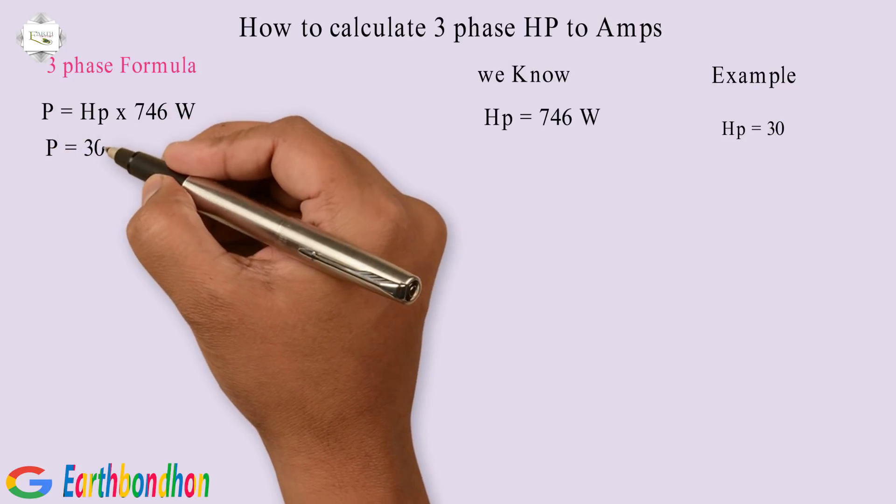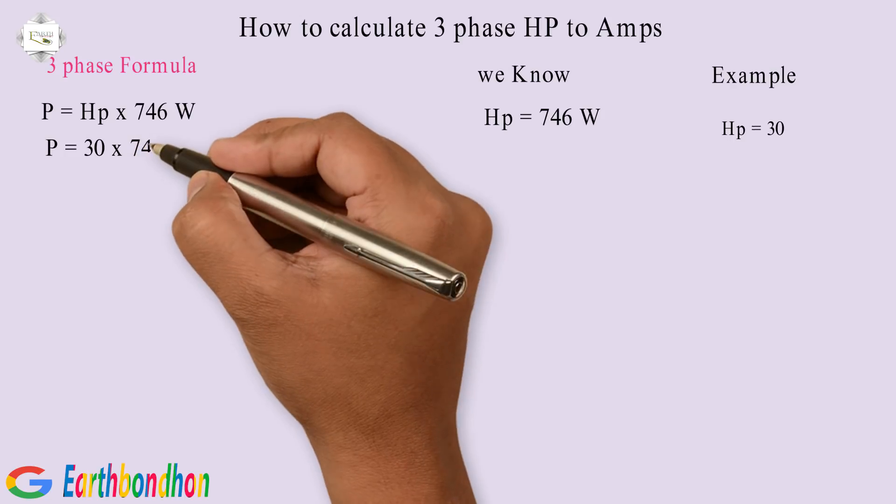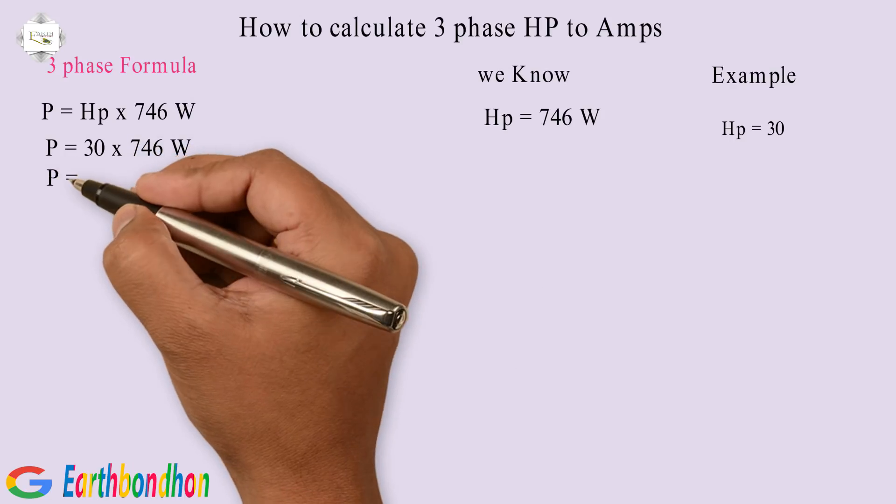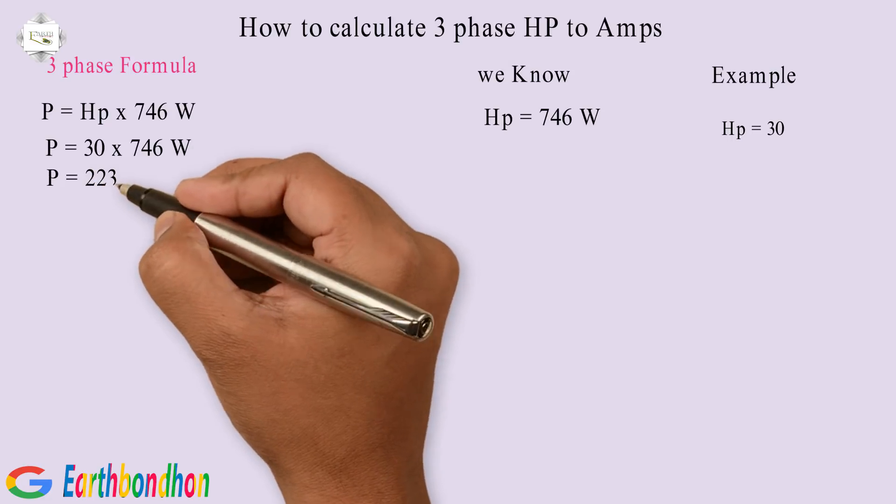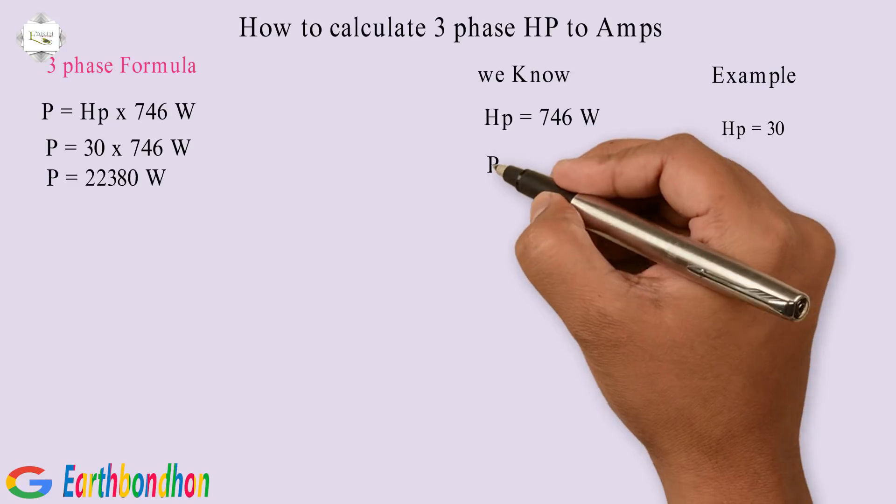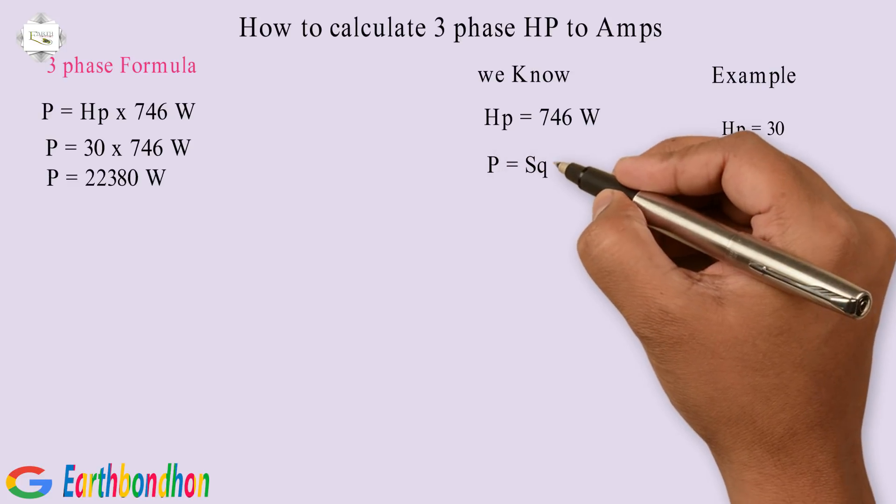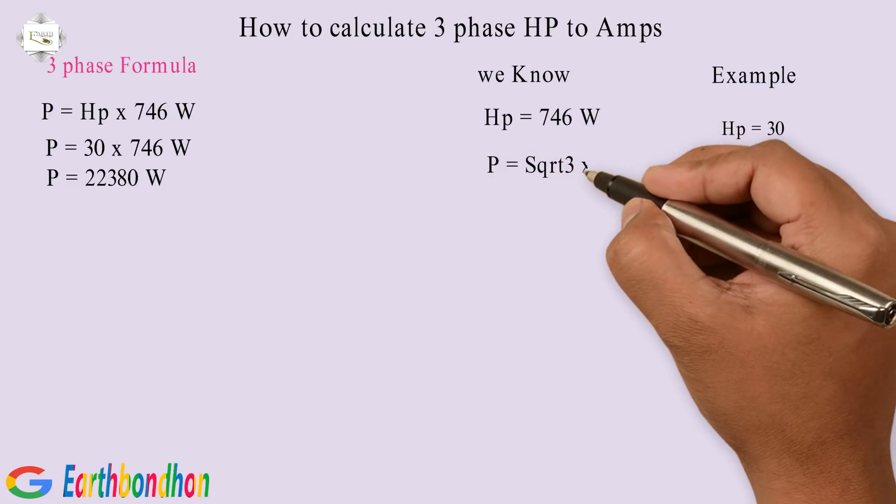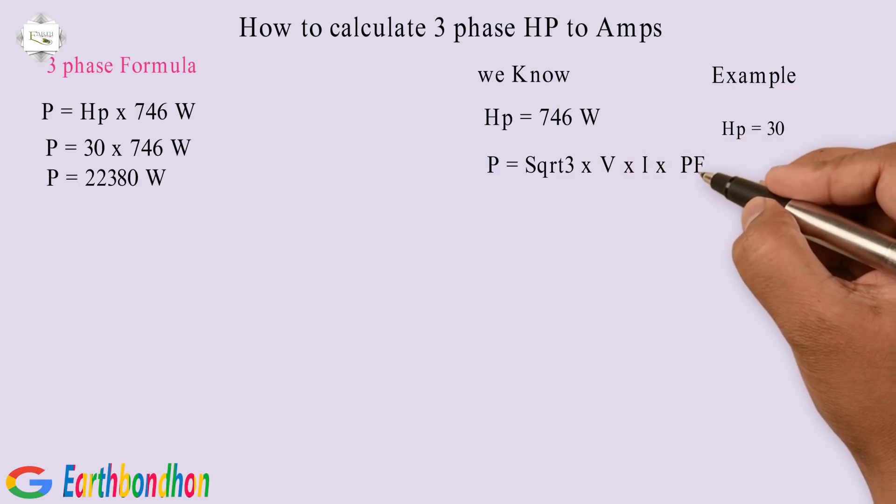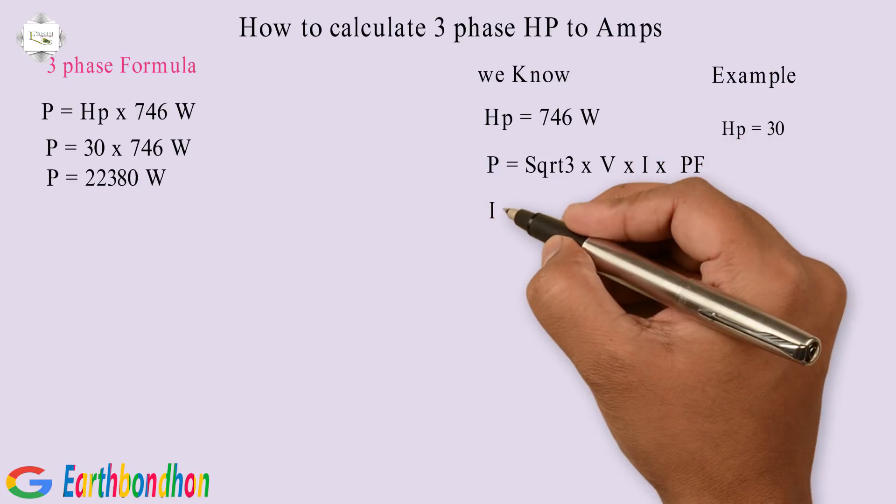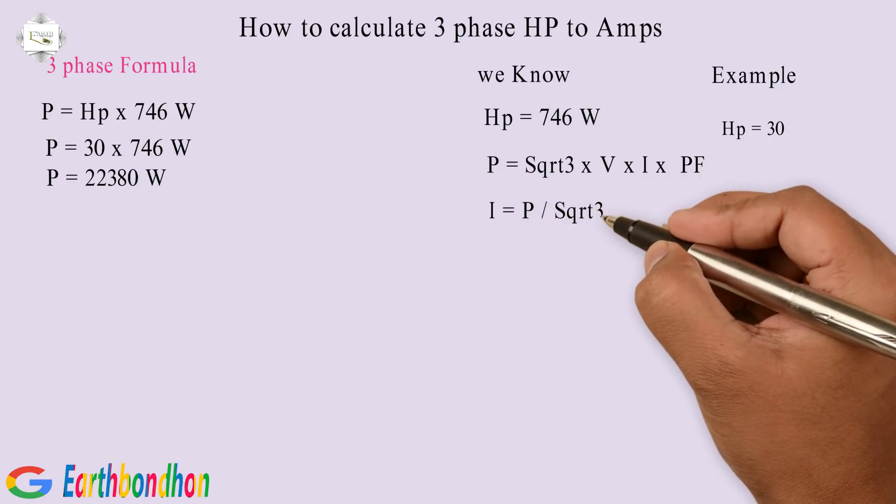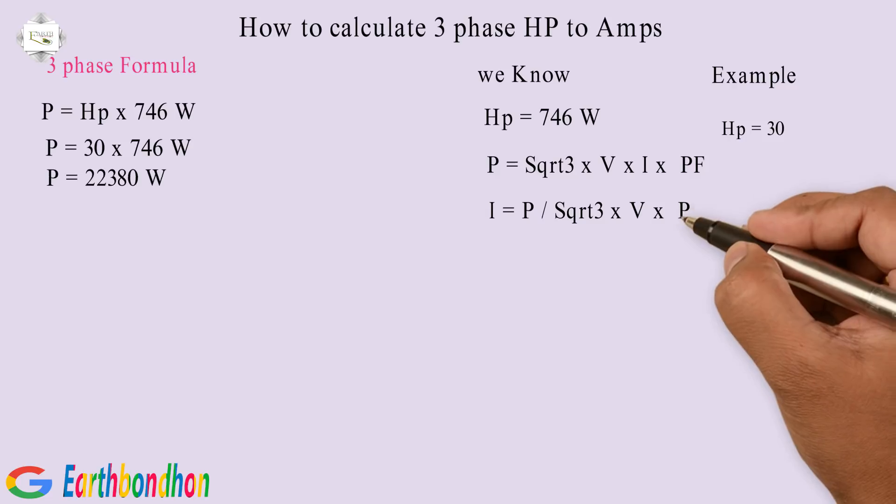Power equals 30 multiplication 746 watts. Power equals 22,380 watts. P equals SQRT3 multiplication volts multiplication amps multiplication PF. I equals P division SQRT3 multiplication V multiplication PF.